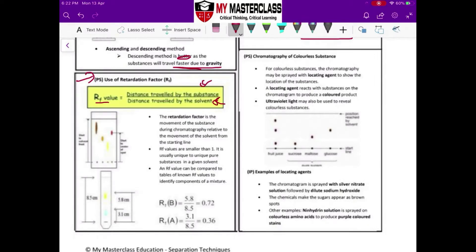Please know your RF value is always smaller than one. It is a small number over a big number. So you know that it's the distance moved by the solute over distance moved by the solvent.